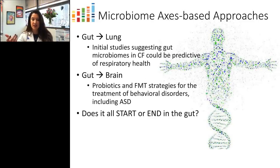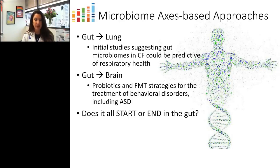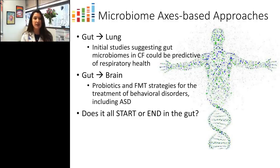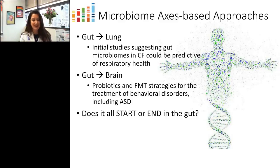Several of our current efforts have moved toward axes-based approaches. One example is exploration of gut-lung crosstalk in patients with cystic fibrosis — there is initial evidence that chronic respiratory pathogens may colonize the gut prior to the first acute lung infection, potentially serving as a canary in a coal mine. And of course our major topic today is the gut-brain axis, where mounting data support the impact of microbial manipulation on behavioral disorders including ASD — leaving us with the proverbial chicken-or-the-egg question: does it all start or end in the gut?